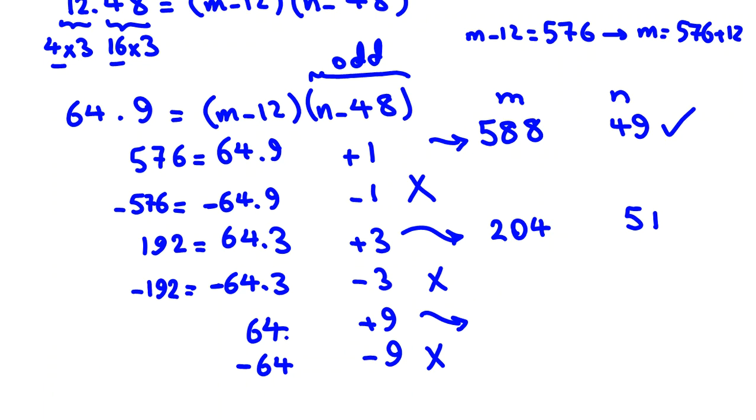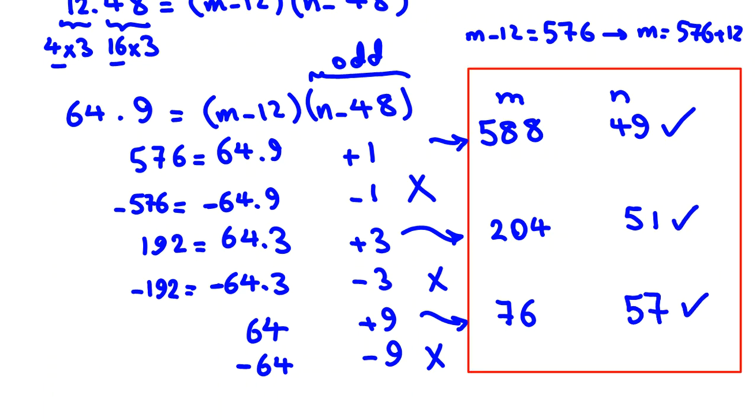Now the last case: 64 plus 12 is 76, and 48 plus 9 is 57.